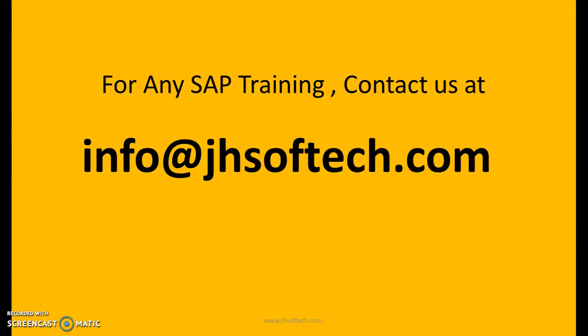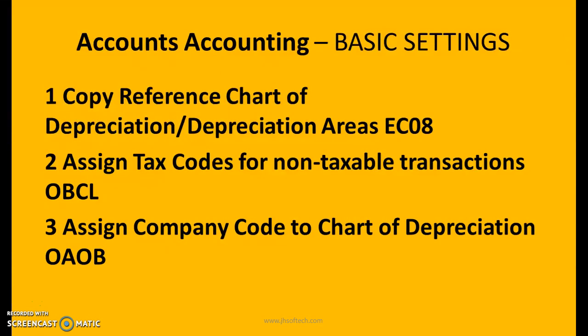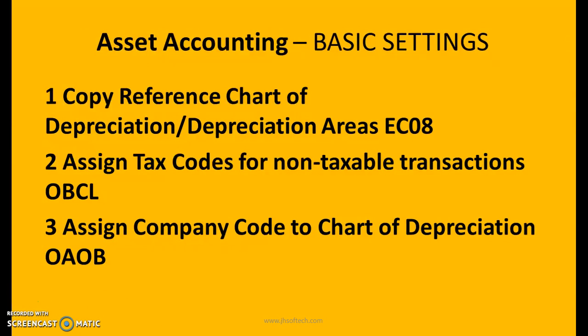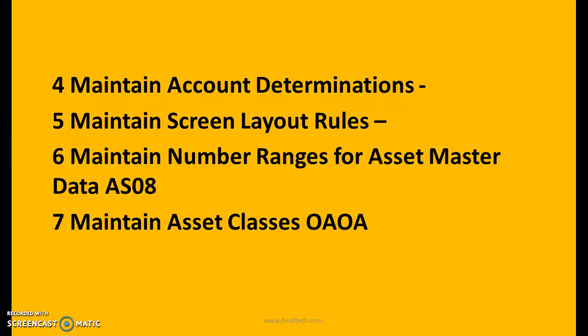For any SAP trainings you can contact us at info@jhsoftech.com. We'll start with asset accounting basic settings. First: copy reference chart of depreciation or depreciation areas. The transaction code is EC08. Set tax codes for non-taxable transactions: OBCL. Assign company code to chart of depreciation: OAOB.